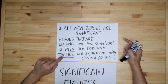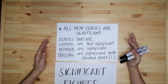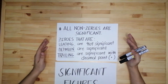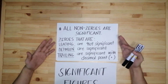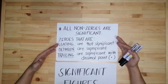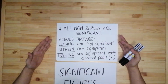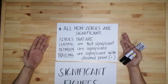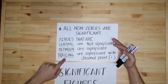Then we also have the trailing zeros, or yung mga nasa dulo. When you find zeros at the end of the numbers, they are significant if and only if there is a decimal point. If there is no decimal point, therefore you cannot count the trailing zeros as significant.